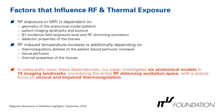The factors that influence RF and thermal exposures are the geometry of the anatomical model of the patient, the patient imaging landmark (whether it's head, heart, or leg imaging), and the patient posture. Also the B1 incident field — the exposure level — and the RF shimming excitation configuration, as well as the dielectric properties of the tissues. The RF-induced temperature increase additionally depends on the thermoregulatory abilities of the patient, especially the local blood perfusion increase, as well as tissue perfusion and thermal properties of the tissues.